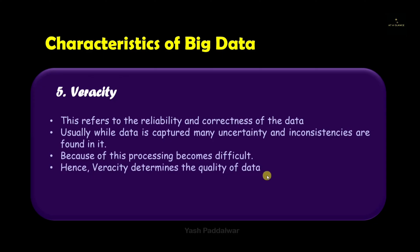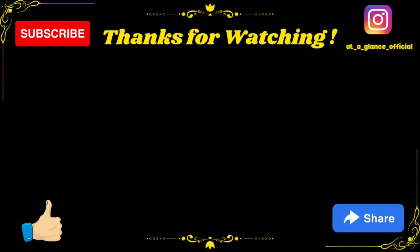So these are the five V's or characteristics of big data: Volume, Variety, Value, Velocity, and Veracity. Understanding these characteristics is key to learning the usage and applications of big data. I hope you have understood all these characteristics. If you have any doubts, please comment below. For more such videos, like, share, and subscribe to the channel, hit the bell icon, and follow me on Instagram. Thank you.